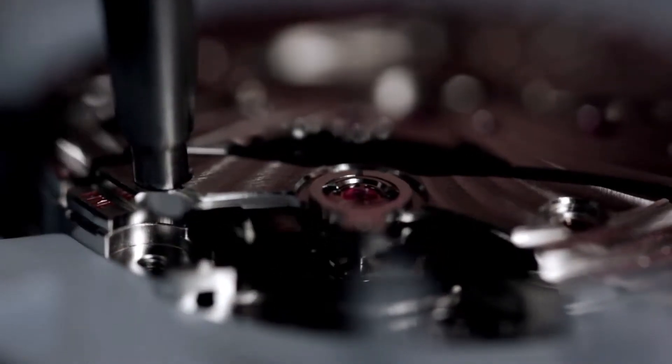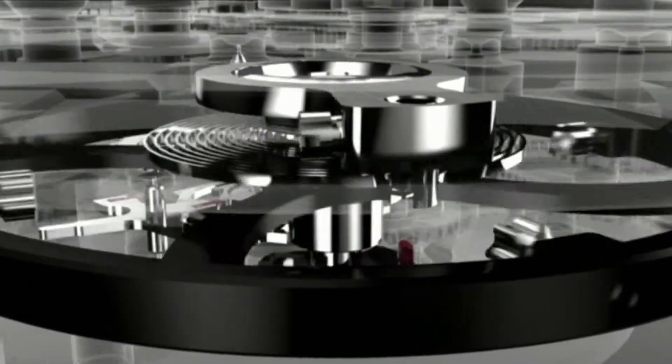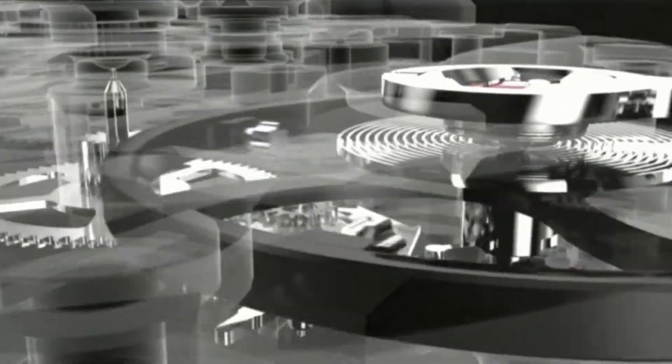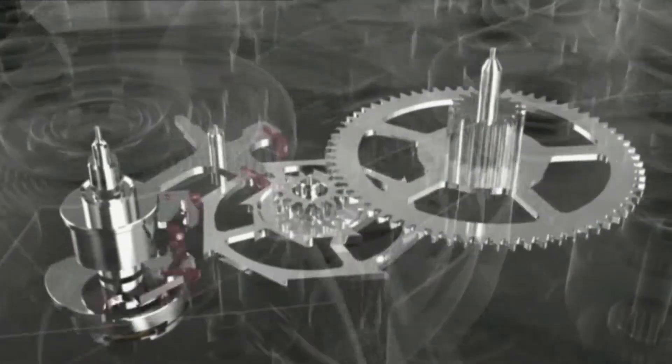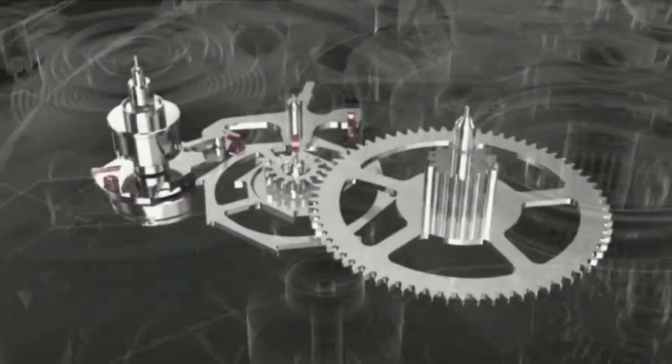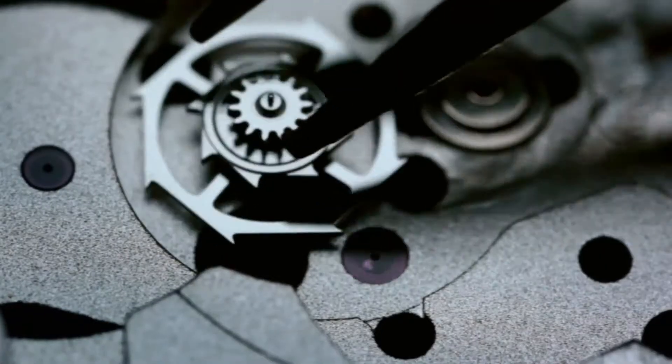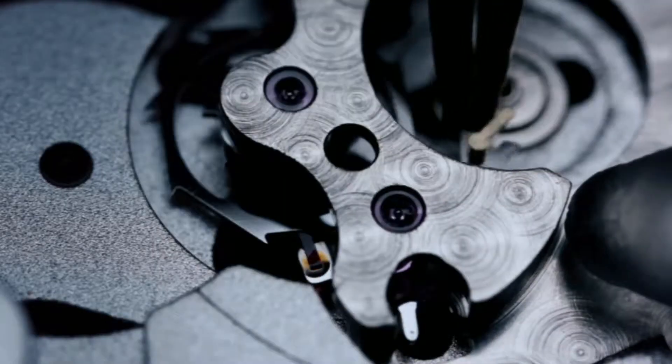At the heart of each one is the first practical watch escapement to be invented in some 250 years. In short, the coaxial escapement reduces friction in the movement, resulting in superb, long-term chronometric performance. The coaxial story is told in near microscopic detail.